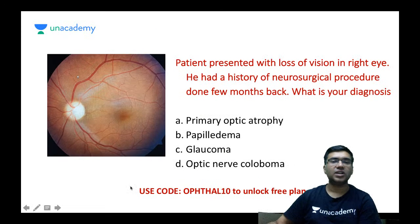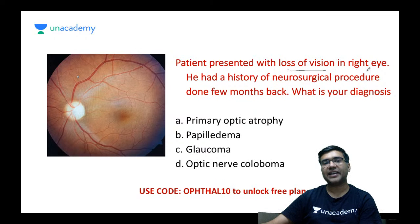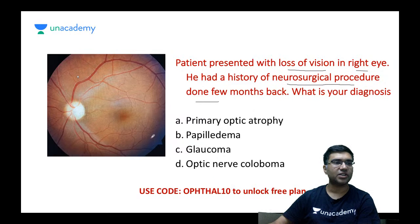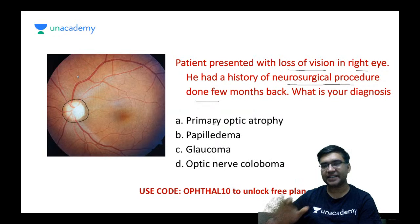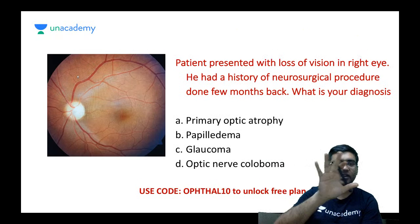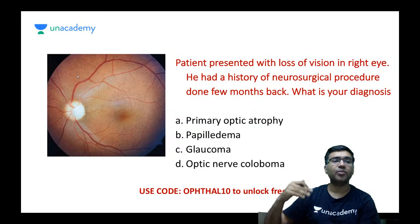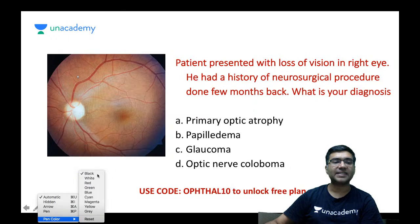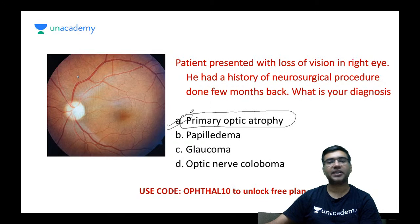A patient with loss of vision in the right eye and a history of a neurosurgical procedure done months back presents with a totally pale optic nerve with normal vessels and no disc edema. Do not confuse this with papilledema or glaucoma. This patient — having had a prior neurosurgical procedure, possibly for macroadenoma — has developed optic atrophy. This is primary optic atrophy.